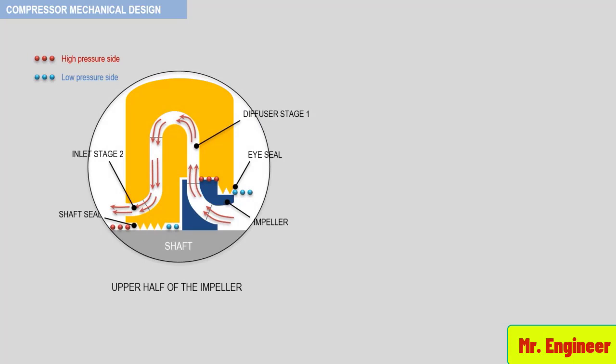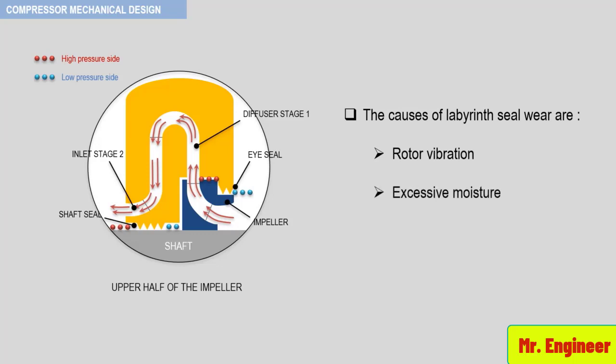The causes of labyrinth seal wear are rotor vibration, excessive moisture, and fouling. What you need to understand is that if your centrifugal compressor head and efficiency fall off greater than 10%, then your compressor should be inspected at the next opportunity, if the compressor is known not to be fouled.